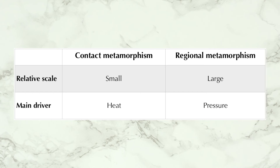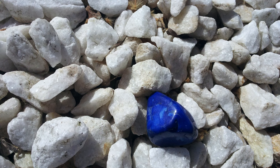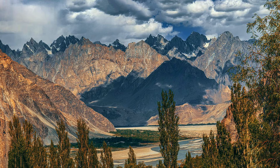Your science teacher will probably have mentioned two main types of metamorphism. They are distinguished in terms of scale and the driving force behind them. First we shall look at contact metamorphism, which operates over relatively small scales. Then we'll look at regional metamorphism, which generates metamorphic rocks over a wide area.